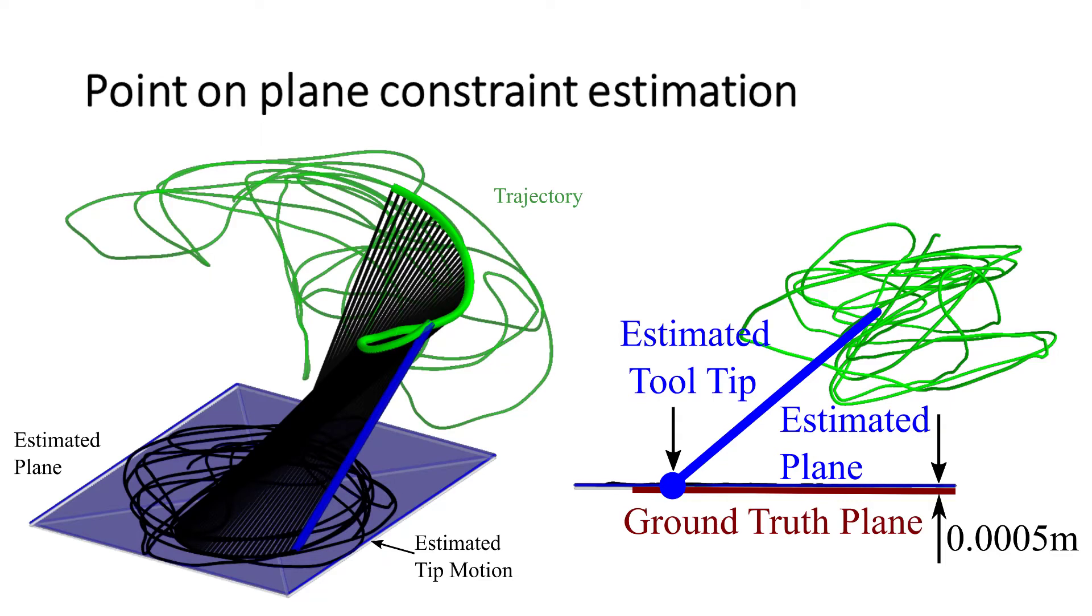The results of the estimation are shown. The green line indicates the trajectory of the stylus. The blue plane is the estimated plane. The tool tip location on the stylus is also estimated and is represented by the black line on the plane. No geometry of the stylus is provided to our method.